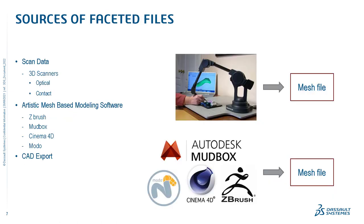Where do these mesh files come from? One source of mesh data is the output from 3D scanners, which are becoming more ubiquitous as their prices decrease and quality increases. You have optical scanners and contact scanners. These scanners produce a point cloud, and then the software joins these points into a triangular mesh file representing the exterior boundary of the scanned object. Mesh files are also the output of artistic mesh-based modeling software — products like ZBrush, Mudbox, Cinema 4D, and Modo.